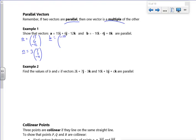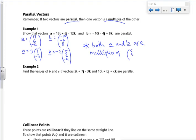b is minus 10, minus 4, 8. See what you can take out as a factor. I can take out 2. Actually, I'm going to take out minus 2. So that would give me a 5, a 2, and a minus 4. There you go. Look at that. So they're both multiples of, a and b are multiples of 5, 2, minus 4. So therefore, they're parallel to each other.